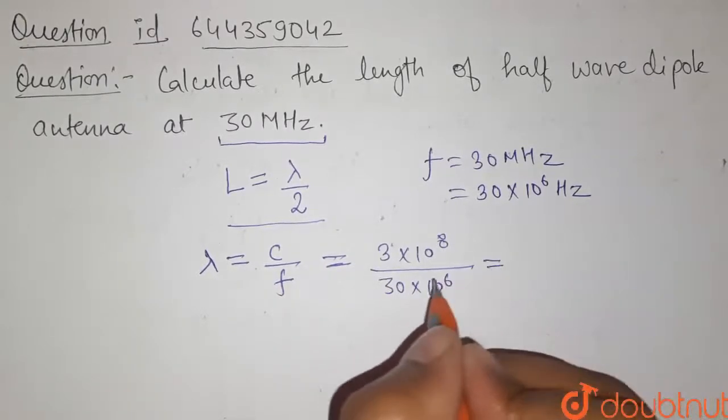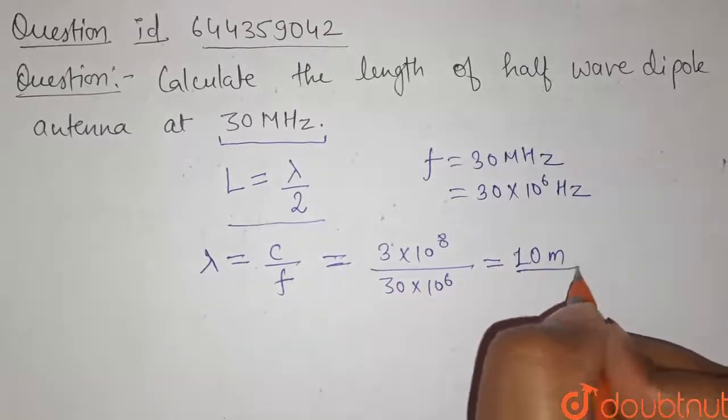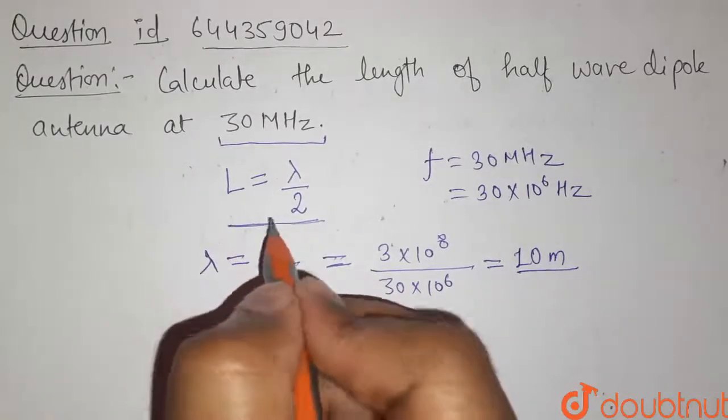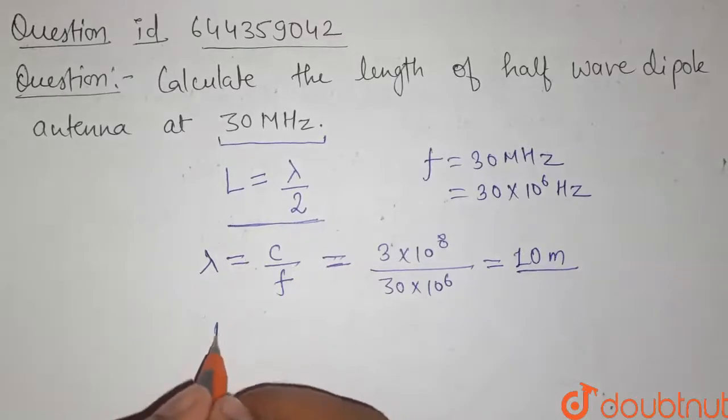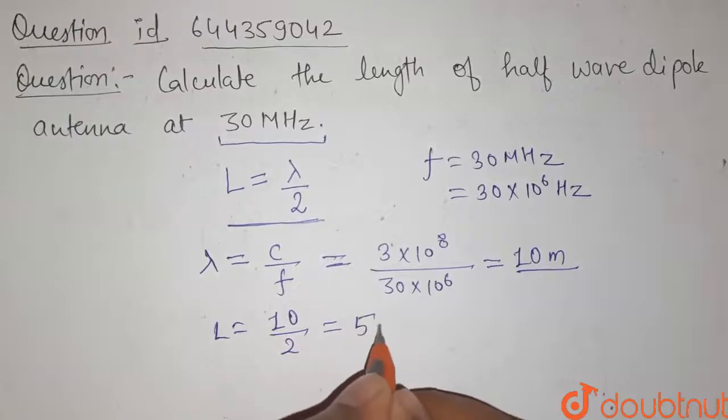On calculating this, we get lambda equals 10 meters. Now, the length of dipole wave antenna is given by L equals lambda by 2, that means 10 divided by 2. So it finally equals 5 meters.